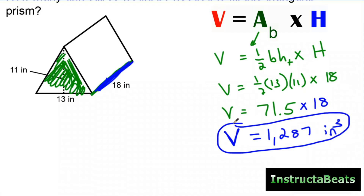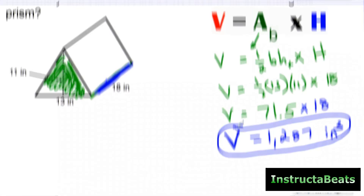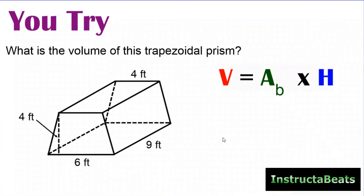Even though this isn't a rectangular prism, it's still the same concept — volume is trying to figure out how many cubic units can fit inside of the shape. Let's take a look at this next problem. It's the same exact concept. We want to know the volume of this trapezoidal prism. We want to find the area of the base — the area of the trapezoid — and then multiply that by 9 layers because the height is 9.